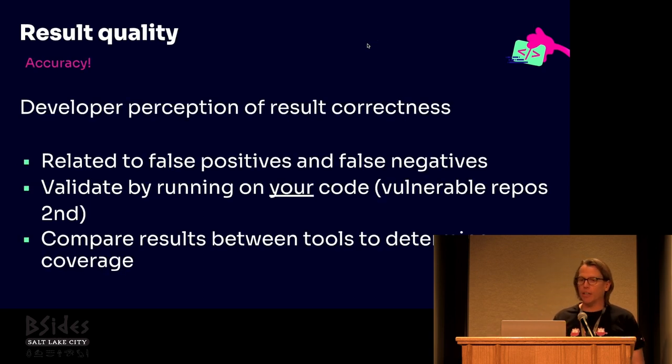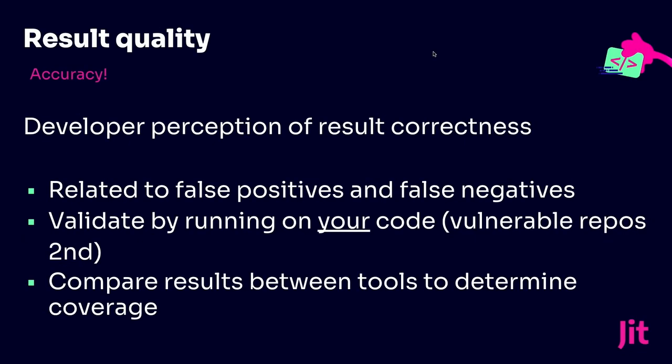For result quality: look at accuracy and the developer perception of result correctness. How many false positives and false negatives are there? Running the actual tools on your code and getting those results gives you comfort that you're getting results you can trust as a developer. That's a really important piece — and then comparing those results with other tools as well.